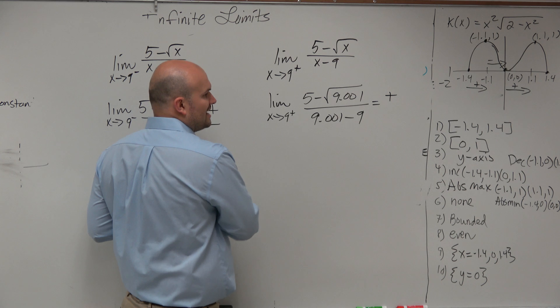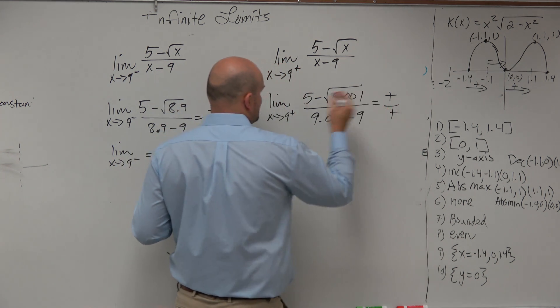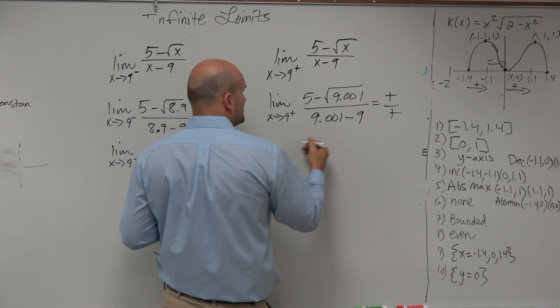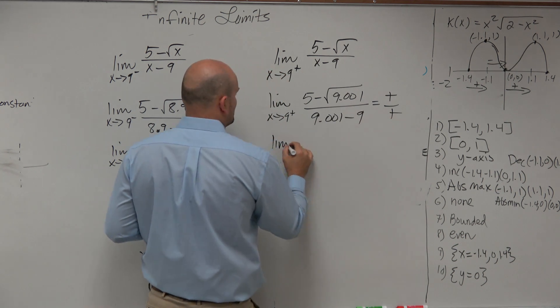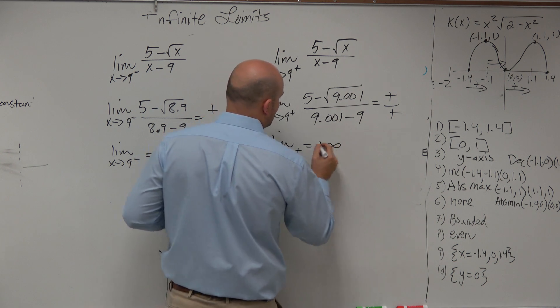And then over here, 9.001 minus 9 is equal to a positive. Positive divided by positive is going to be a positive. So we'd write as limit as x approaches 9 from the right is equal to positive infinity.